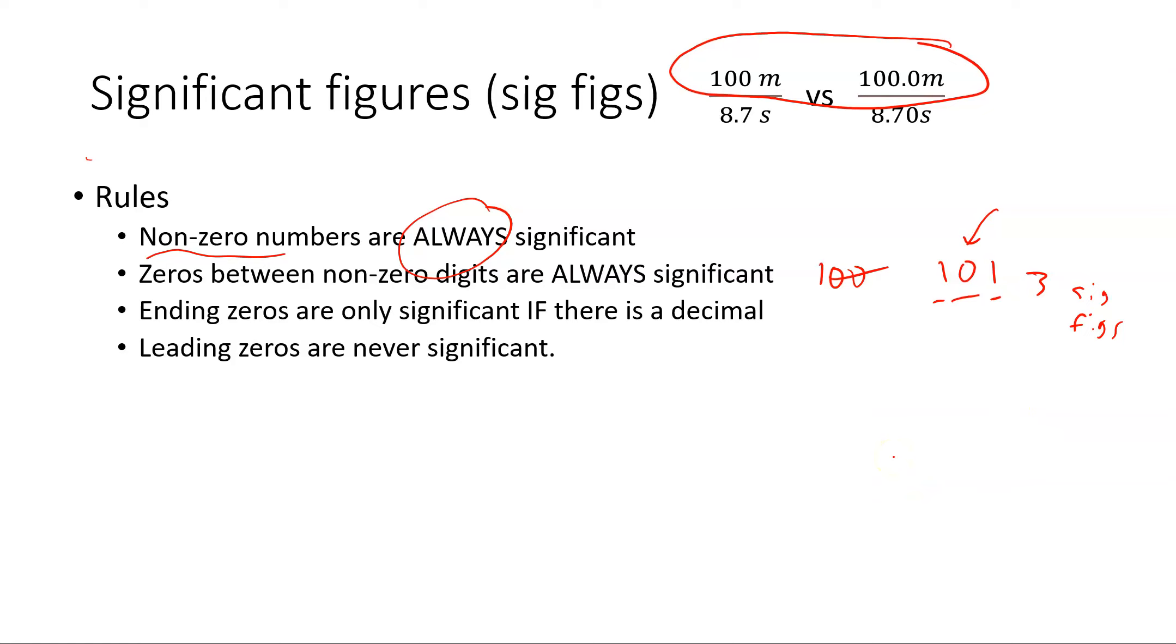So 0.00034, leading zeros never significant, so that would have two sig figs - the three and four.